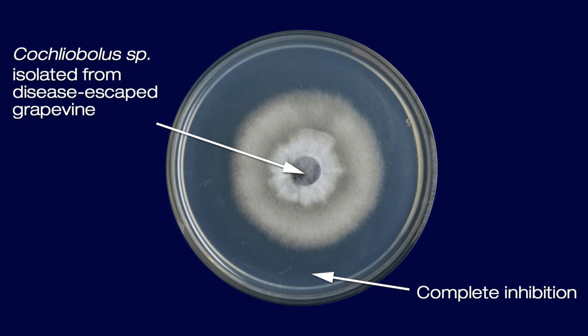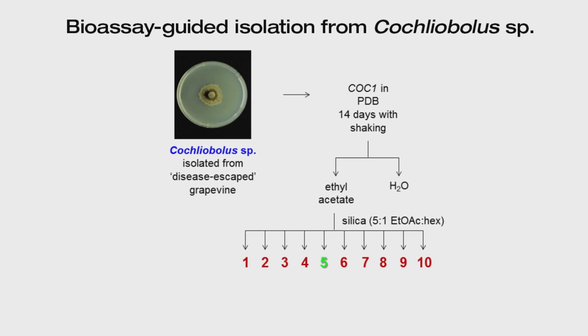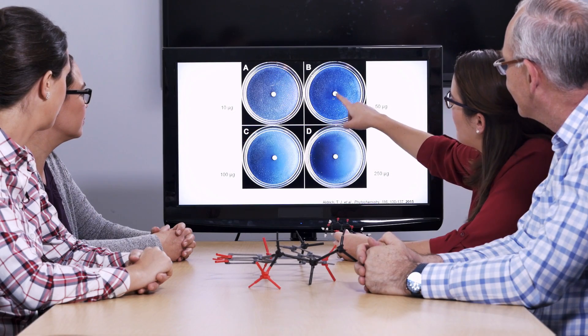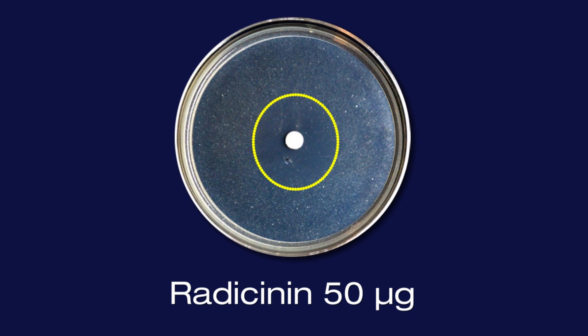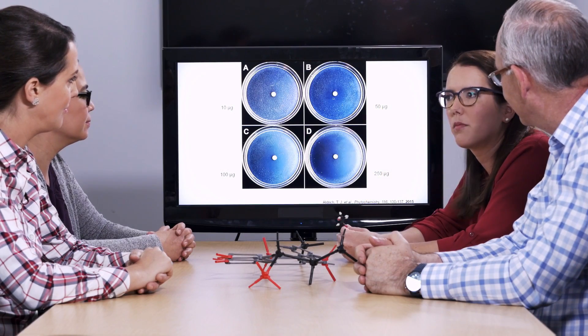We operated under the hypothesis that a fungus might be producing a small molecule — a chemical — that inhibits Xylella. To isolate that molecule, we used column chromatography, which separates compounds by polarity. We tested each of the ten fractions, and somewhere in the middle, one tested positive for inhibiting Xylella. The major compound in that fraction was a known molecule called Radissonin. We applied different doses to filter discs: at 50 micrograms we saw a small zone of inhibition, and at 100 micrograms it got bigger — compelling data that Radissonin was responsible for the inhibition.